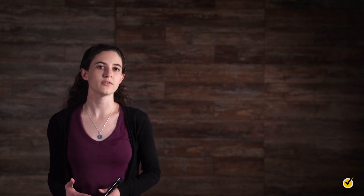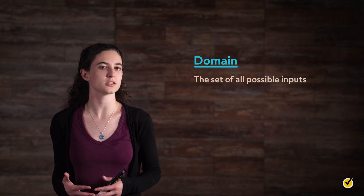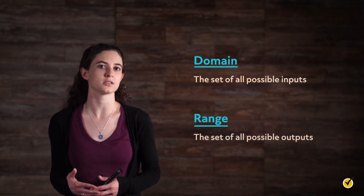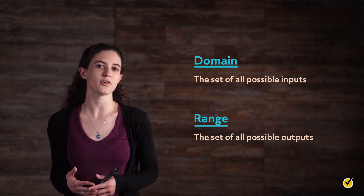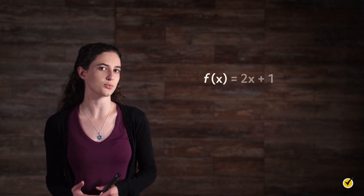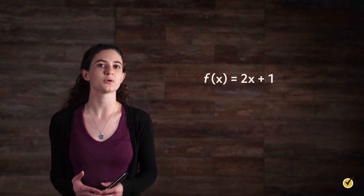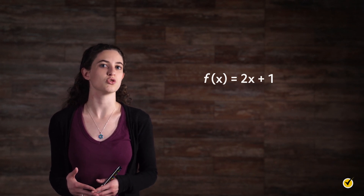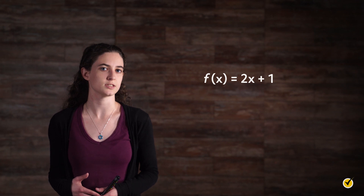Before we begin, let's quickly revisit the terms domain and range. The domain of a function is the set of all possible inputs, while the range of a function is the set of all possible outputs. The structure of a function determines its domain and range. Some functions, such as linear functions — for example f(x) = 2x + 1 — have domains and ranges of all real numbers because any number can be input and a unique output can always be produced.